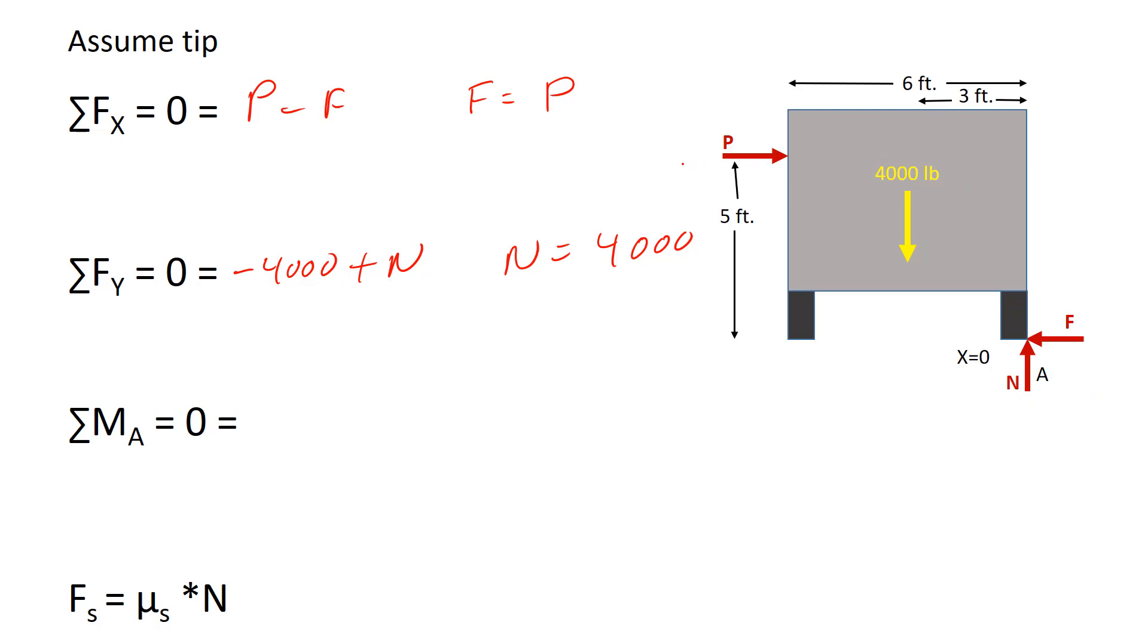Sum of the moments about A equals zero. Because it's about A, those two forces don't enter into our equation at all. So we just have the moments from the applied force and the weight of the vehicle. So my moment from the weight is 4,000 pounds times three feet. And that's counterclockwise. So it's positive minus our unknown P times that distance of five feet. If I solve for P, I get P equals 2,400 pounds to make it tip.